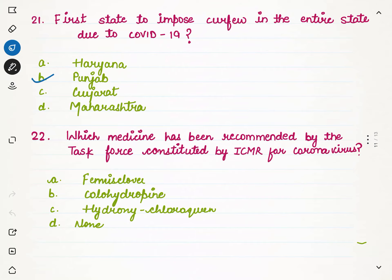Which medicine has been recommended by the task force constituted by ICMR for coronavirus? We heard a lot about this medicine at the start — even countries like America demanded this medicine and we exported it to many countries. ICMR — you can write its full form in the comment box. The correct answer is hydroxychloroquine. There was very high demand for this medicine; even the USA said we will impose restrictions, and Trump gave some statements about it. So the correct option is hydroxychloroquine.